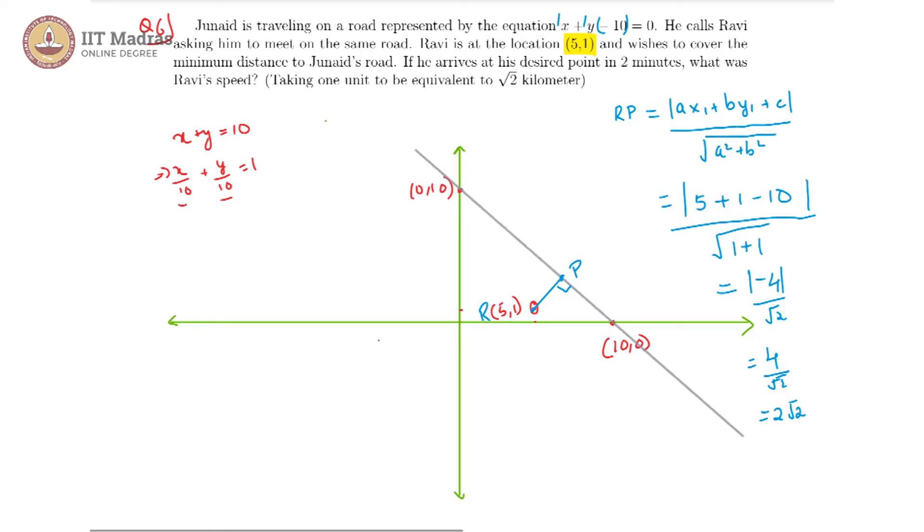And now, it is given that 1 unit is equivalent to root 2 kilometers. That means, the distance in kilometers, rp in km, is equal to 2 root 2 into root 2, that is 4 km.